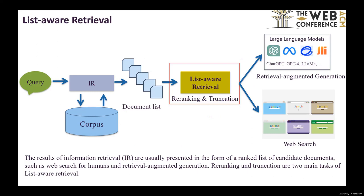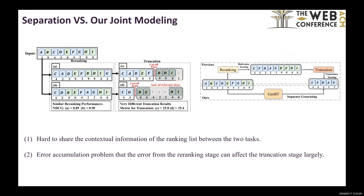The results of information retrieval are usually presented in the form of a ranked list of candidate documents, such as web search for humans and retrieval augmented generation. Reranking and truncation are two main tasks of list-aware retrieval. Previous studies treat them as two separate tasks and model them separately. However, this separation is not optimal.